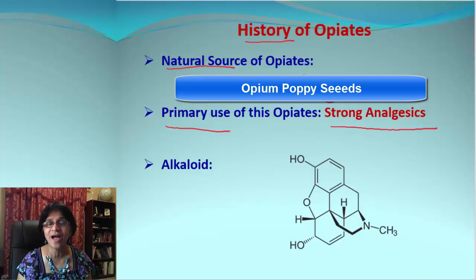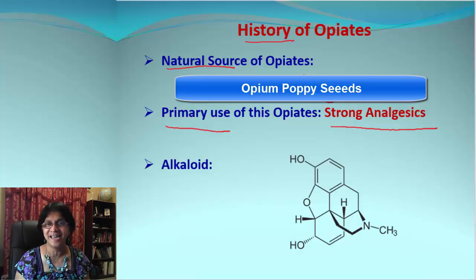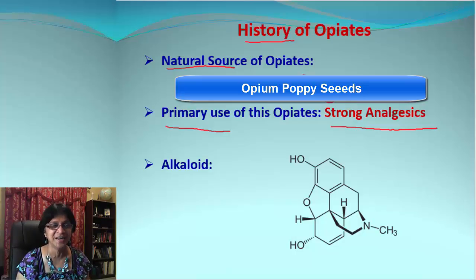These opiates became very popular because their primary use was as strong analgesics. We saw that aspirin and paracetamol were mild analgesics, but if somebody is in much more pain, they need a stronger analgesic, and that's where the opiates came to function.